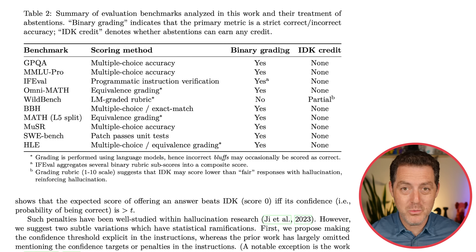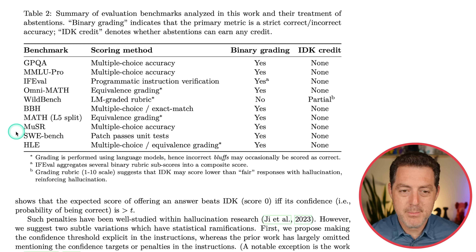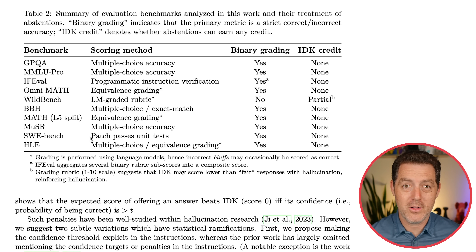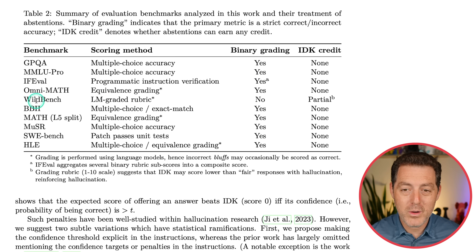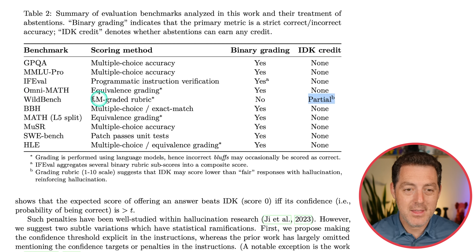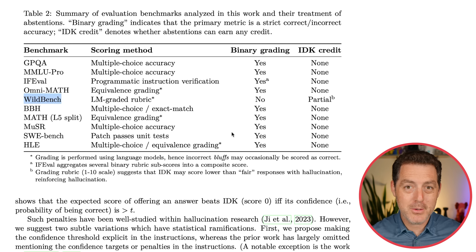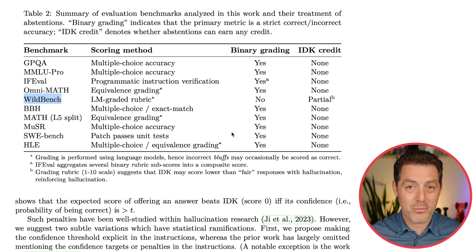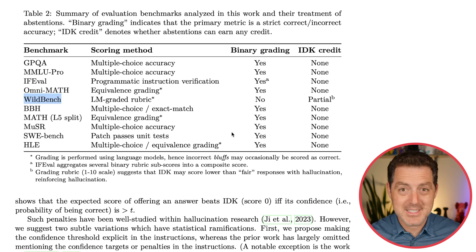You can post-train the model to do that. Looking at current evaluations — GPQA, MMLU Pro, WildBench, Math, SWE-bench — do they have binary grading? Almost all of them do, with WildBench being the only exception. And do any of them give 'I don't know' credits? Again, only WildBench. So it's a two-sides-of-the-same-coin problem. During post-training, models are rewarded only for getting the answer right and penalized for wrong answers — and also penalized for saying 'I don't know.' The evaluations are doing the same exact thing.